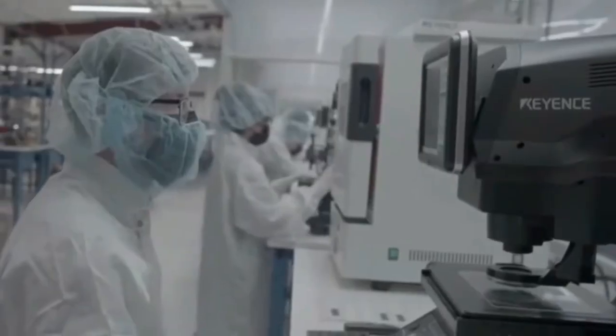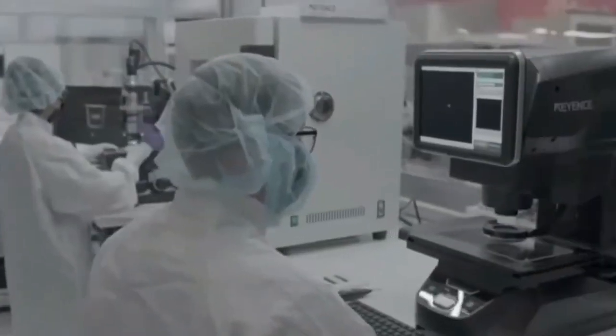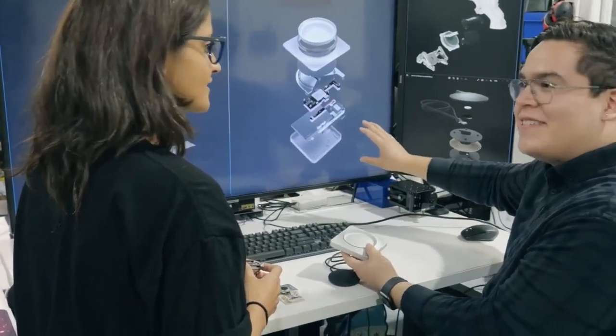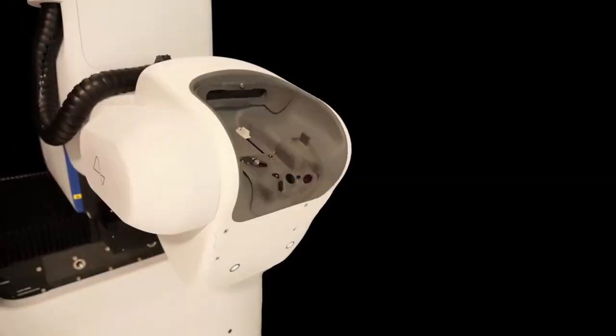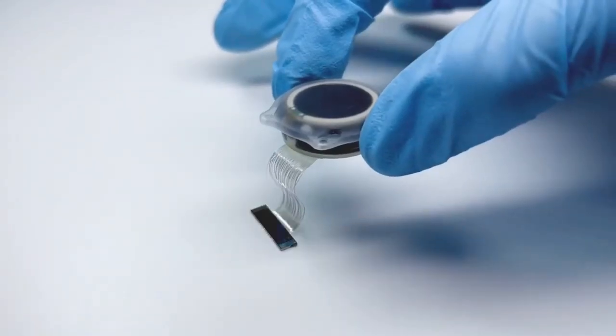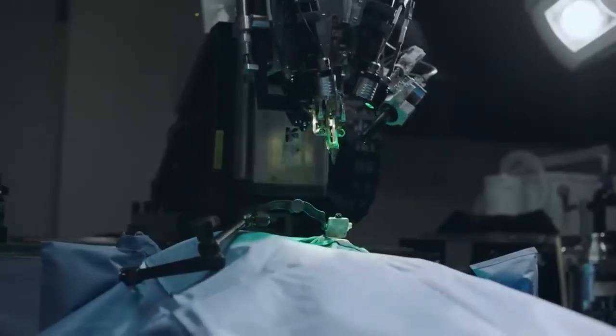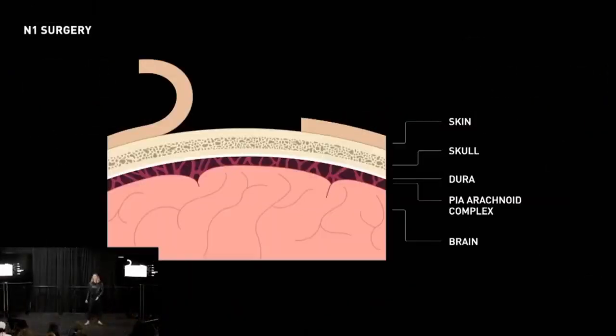So, this is something that could be used for somebody who's, say, a quadriplegic or tetraplegic human. Even before we make the spinal cord stuff work, is being able to control a mouse cursor, control a phone. And we're confident that someone who has basically no other interface to the outside world would be able to control their phone better than someone who has working hands.